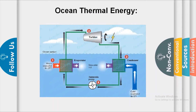The advantages of OTEC: power generated is renewable and free from pollution. The output shows very little seasonal or daily variation. The electric power generated can also be used to produce hydrogen, and the cold water pumped in the plant can be used for other purposes such as air conditioning. The disadvantage is that it is only suitable in tropical regions, and initial setup costs are high.